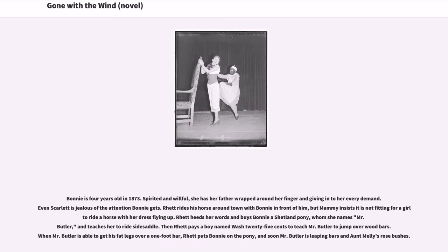Bonnie is four years old in 1873. Spirited and willful, she has her father wrapped around her finger, giving in to her every demand. Rhett rides his horse around town with Bonnie in front of him, but Mammy insists it is not fitting for a girl to ride a horse with her dress flying up. Rhett heeds her words and buys Bonnie a Shetland pony, whom she names Mr. Butler, and teaches her to ride side saddle. Then Rhett pays a boy named Wash 25 cents to teach Mr. Butler to jump over wood bars, and soon Mr. Butler is leaping bars in Aunt Mally's rose bushes.